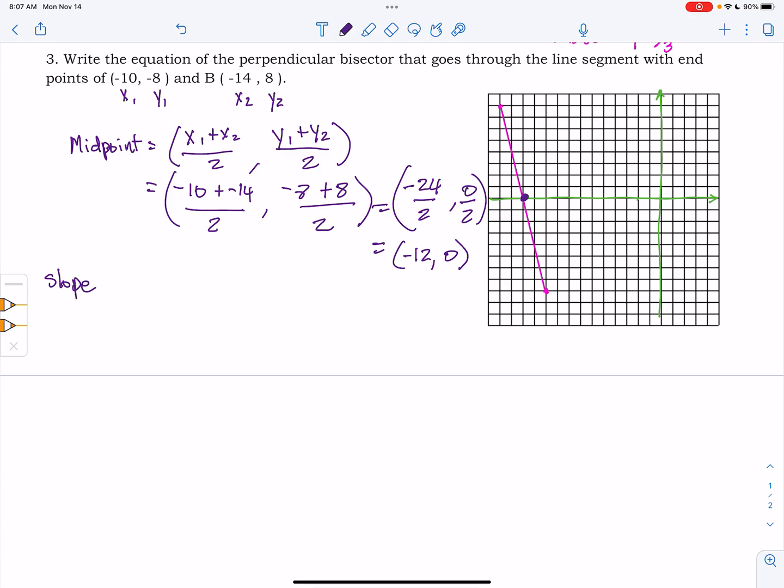which is y2 minus y1 over x2 minus x1. And so plugging these numbers in that we have here, we have y2 is 8, so 8 minus negative 8 over negative 14 minus negative 10.